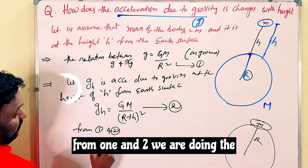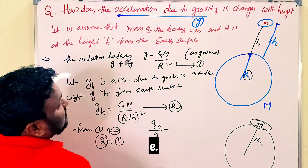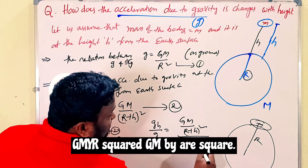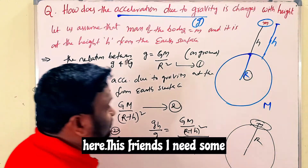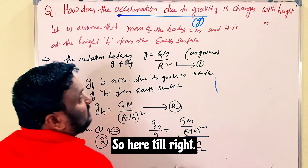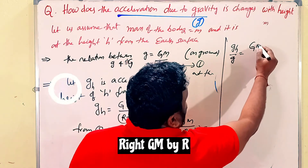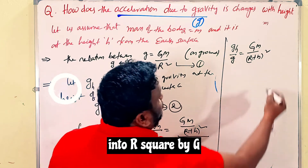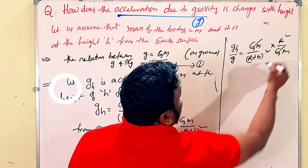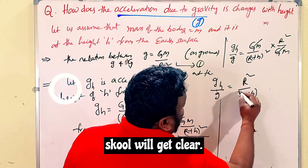From equations one and two, we divide equation two by equation one. So gh/g equals [GM/(R+h)²] divided by [GM/R²]. The GM terms cancel, giving gh/g = R²/(R+h)².